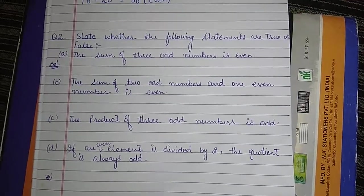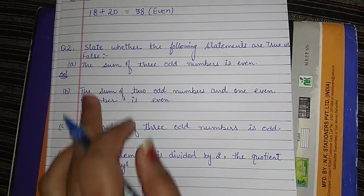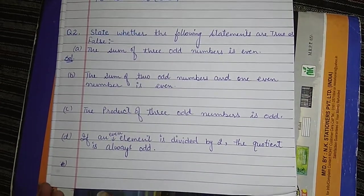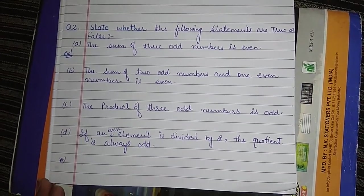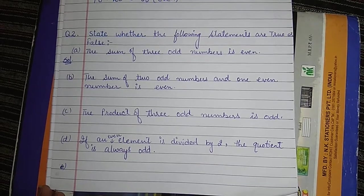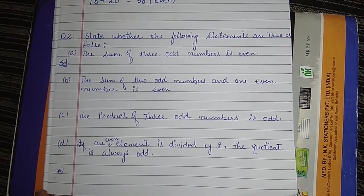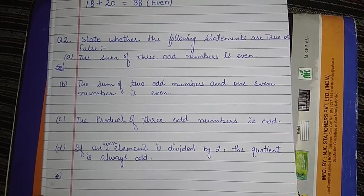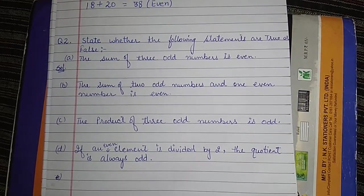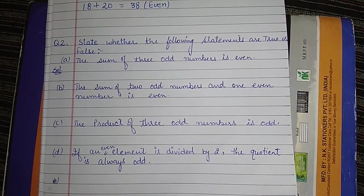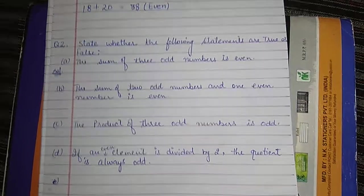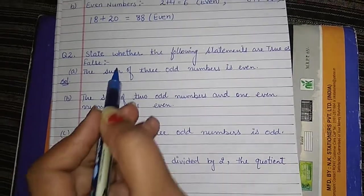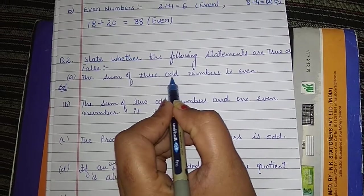Hello students, now we continue Exercise 3.2, Playing with Numbers, question number 2: State whether the following statements are true or false. In the first statement given, the sum of three odd numbers is even. Three odd numbers here.